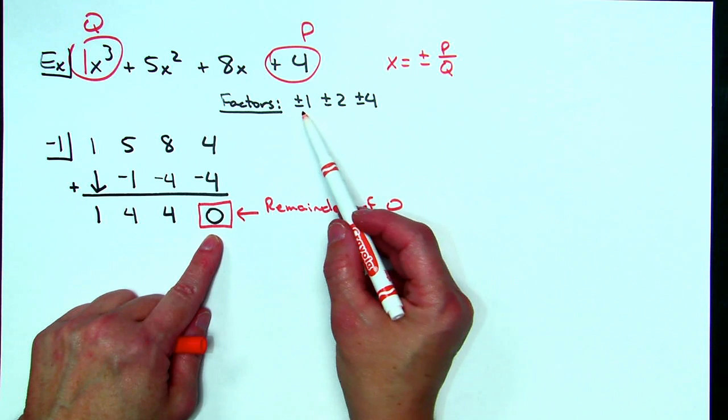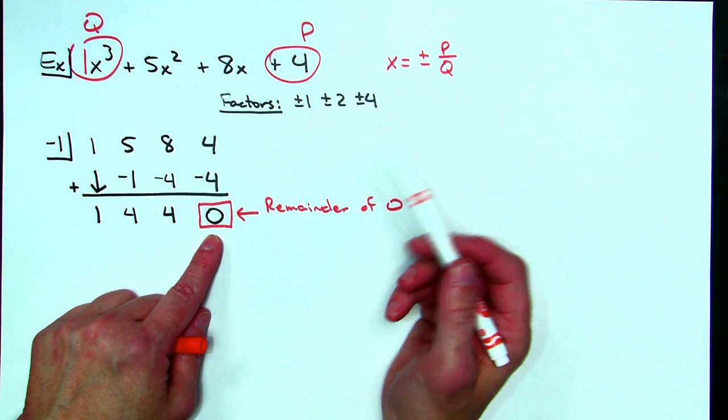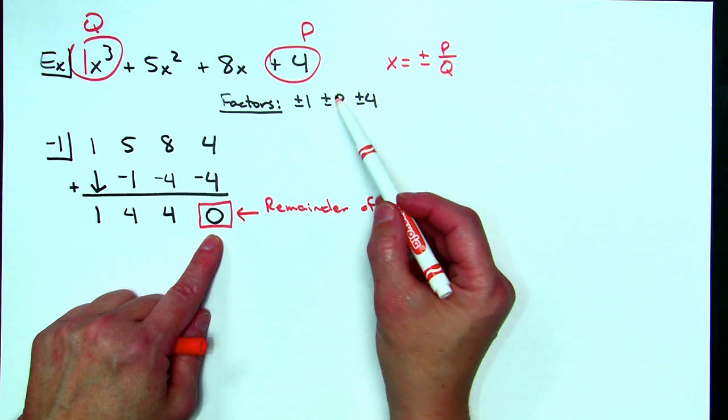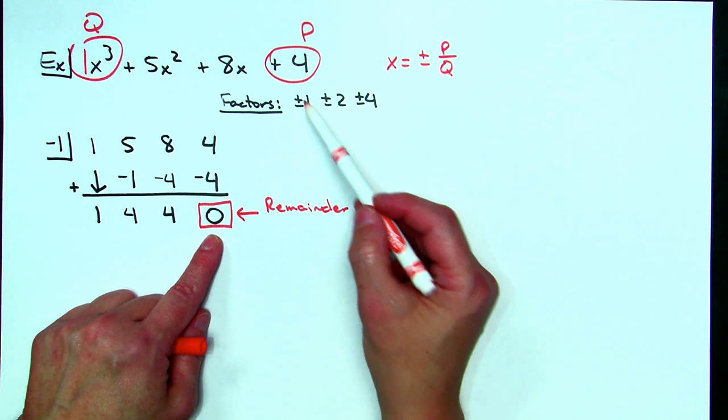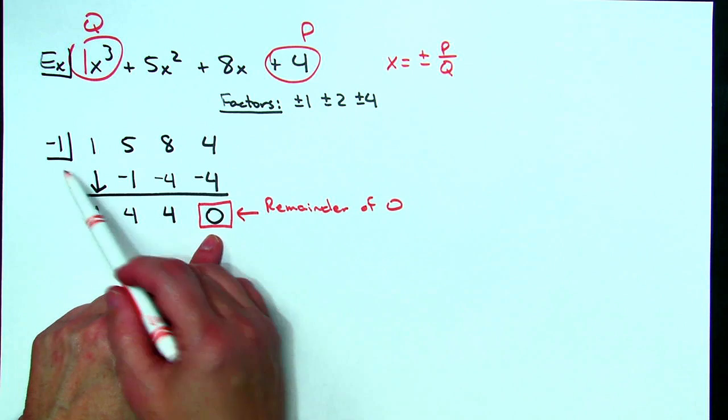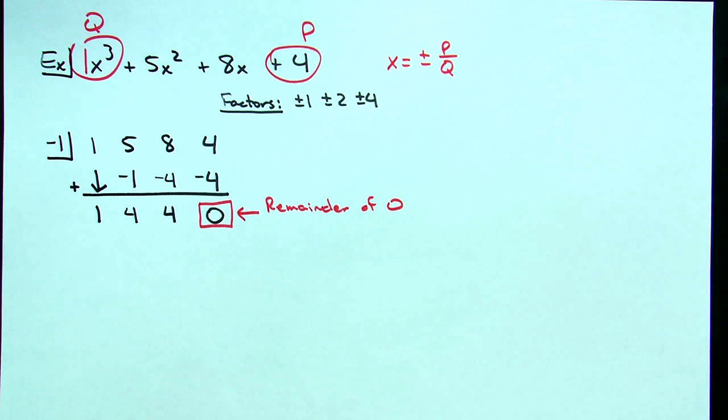and I would have had to try positive one and if that would not have gotten a remainder of zero then I had to try positive two. You have to keep trying each one of these factors until you come up with a remainder of zero.